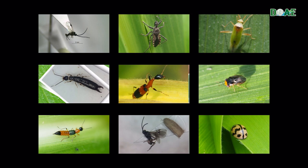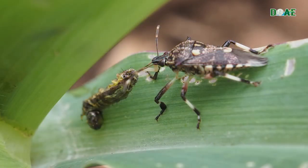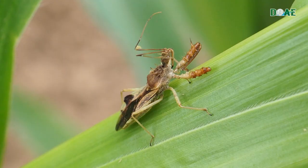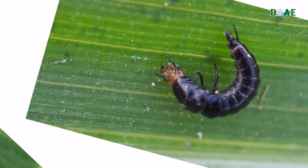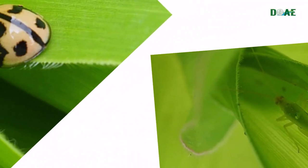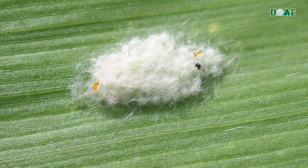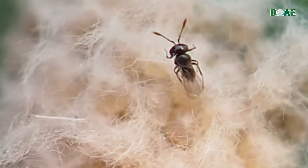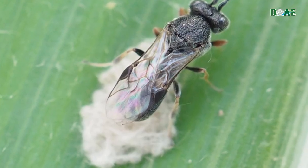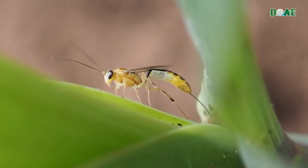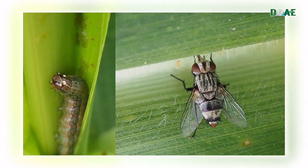Predators for controlling fall armyworm include sting bugs, earwigs, ground beetles, assassin bugs, and many more. The parasitoids found include egg parasitoids, egg-larvae parasitoids, larvae parasitoids, and parasitoid flies.